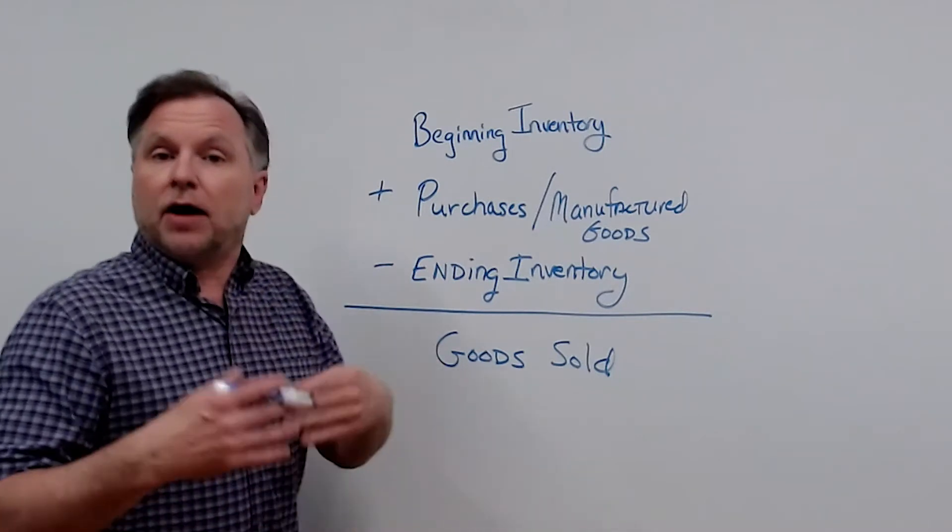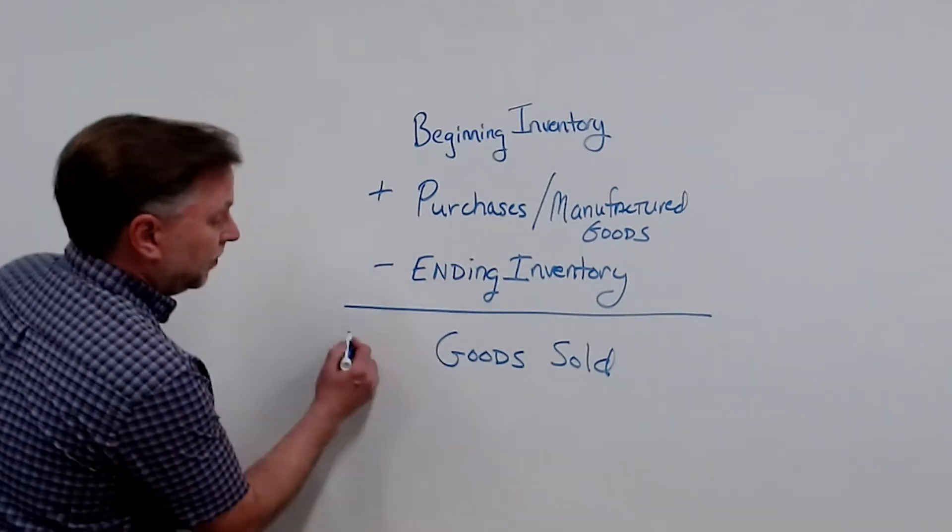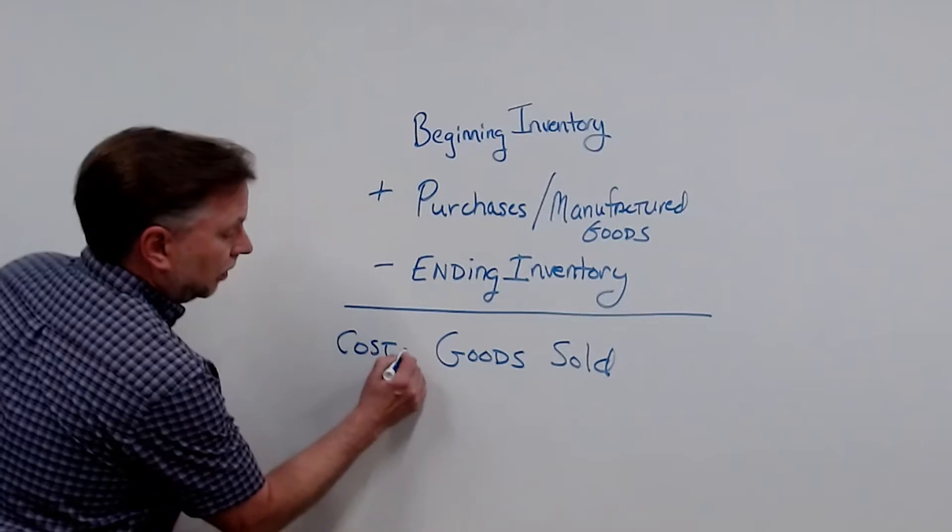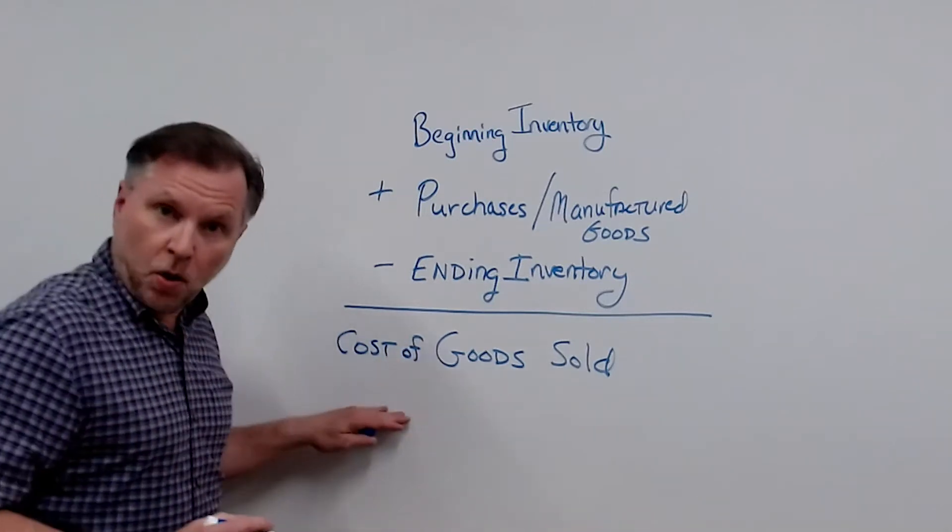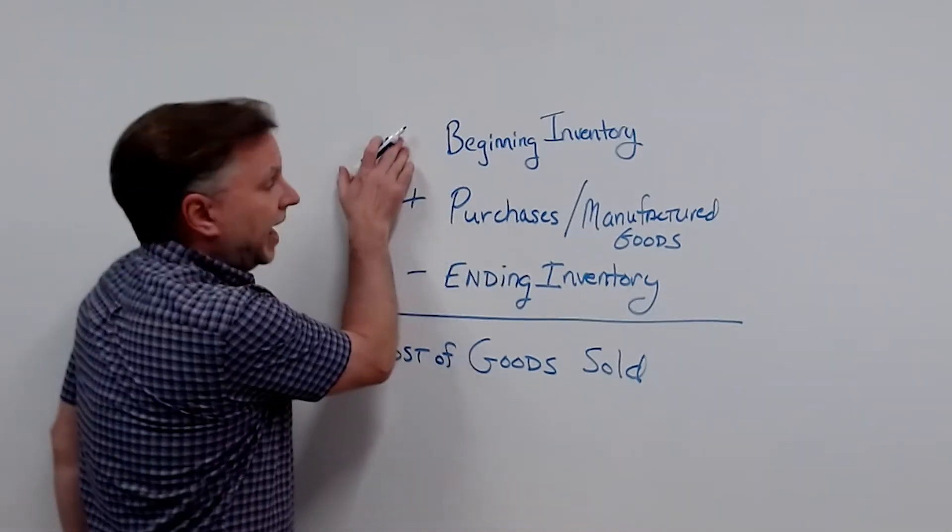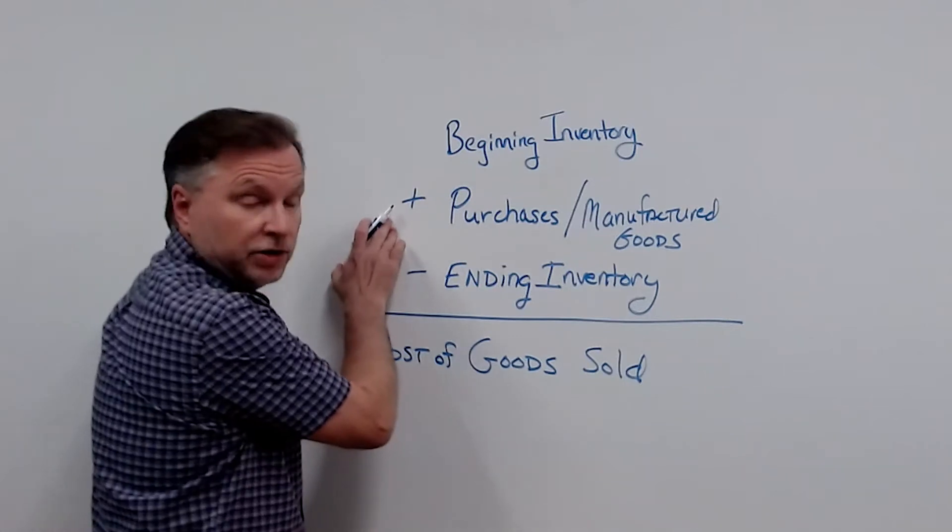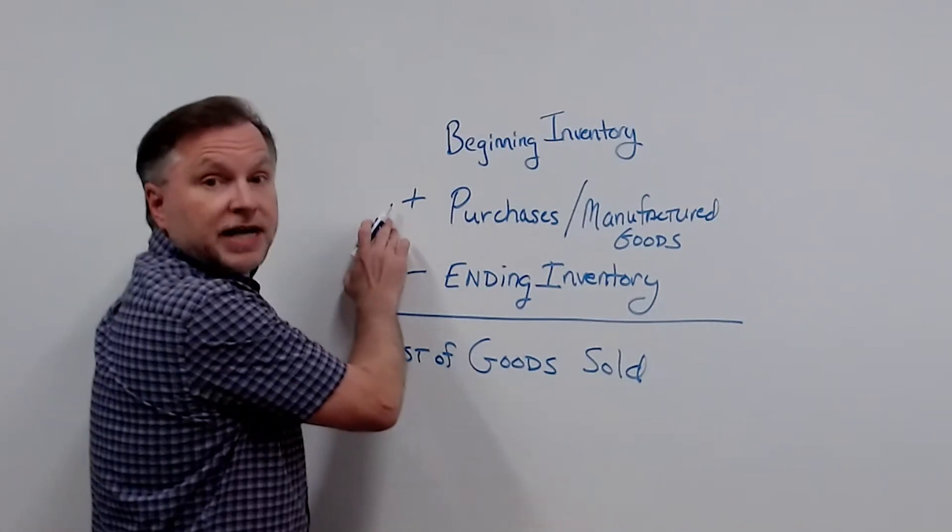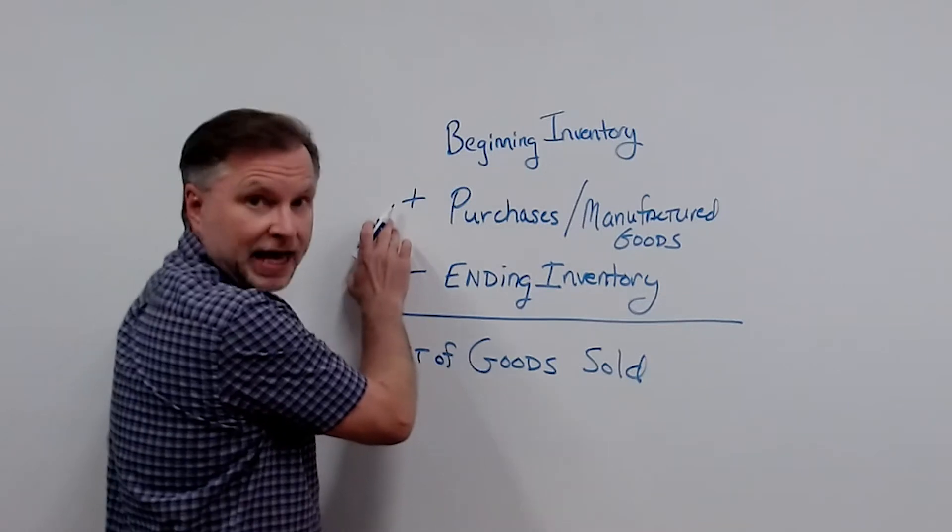That's the quantity. Now, if we're into cost, then it will be our cost of goods sold. The beginning inventory we have, plus the purchases and manufactured goods, give us our cost of goods available for sale.